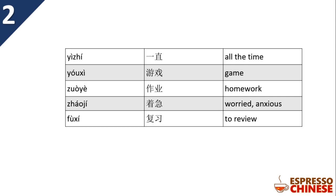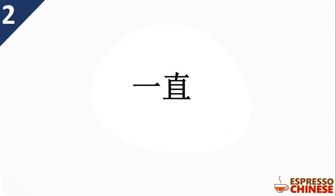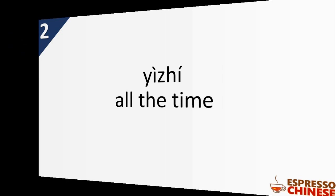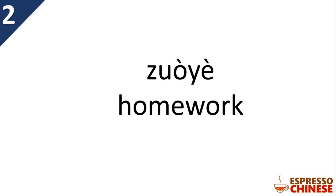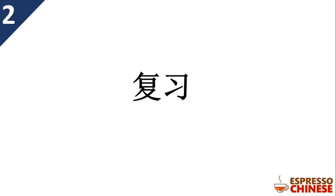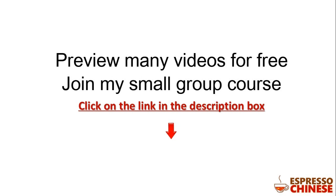Let's review all the words: 一直 means 'all the time'; 游戏 means 'game'; 作业 means 'homework'; 着急 means 'worried/anxious'; 复习 means 'review'. Hope you remember all the words! You can preview many videos for free by clicking the link in the description box. If you want to join my small group course, you can also click the link to let me know.